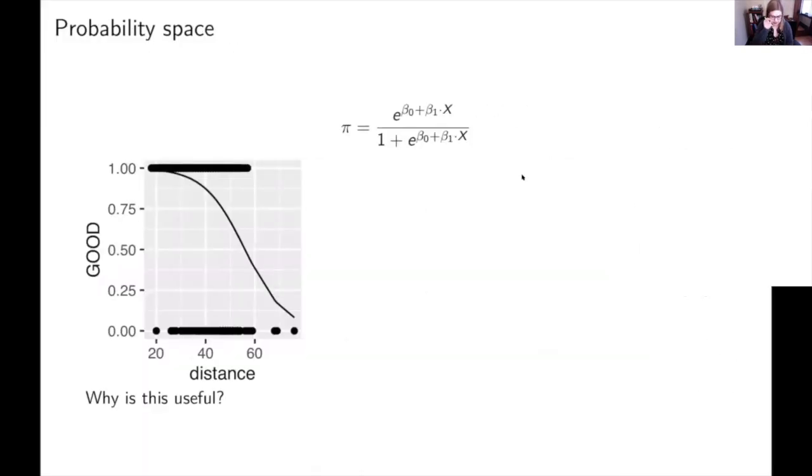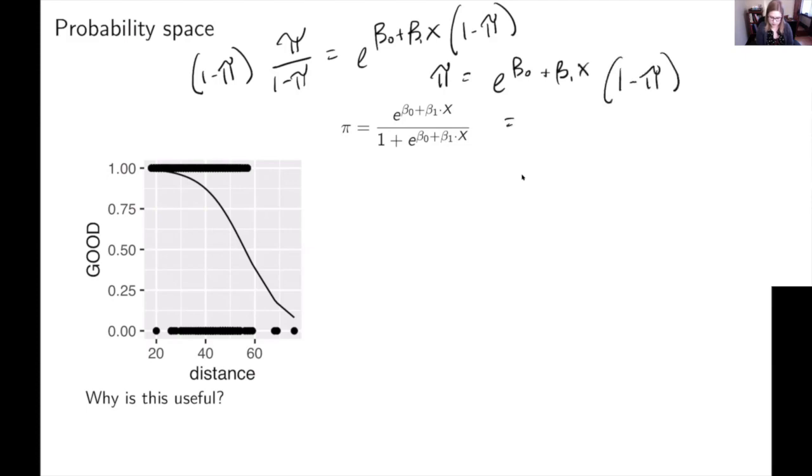And then our last space is the probability space. So on the previous slide, I had pi over one minus pi was equal to E to the beta zero plus beta one X. And then pi is the probability. So if I need to solve for pi, I'm just going to run through it quickly to convince you that I didn't make a mistake here, but you don't really need to know the algebra. So I'm going to multiply both sides by one minus pi. And then I get pi is equal to E to the beta zero plus beta one X times one minus pi. And I could distribute that E to the beta zero plus beta one X minus E to the beta zero plus beta one X pi.